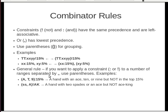The general rule is: if you want to apply a constraint to a number of ranges separated with commas, just put them in parentheses. So if you want to say an ace, a ten, or a nine in the top fifteen percent, you put the comma-separated stuff in parentheses — just like that.